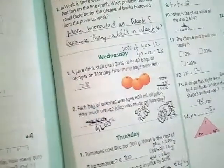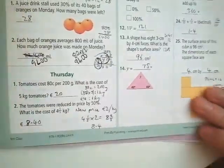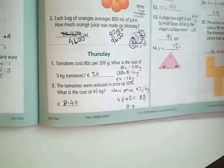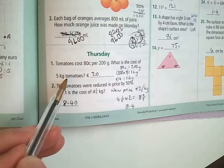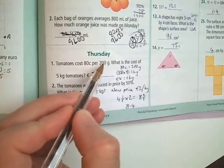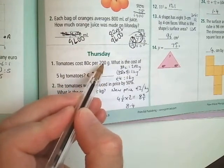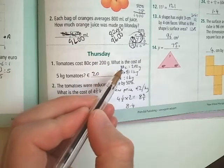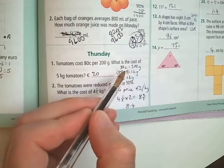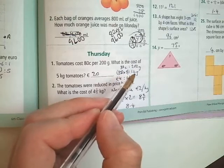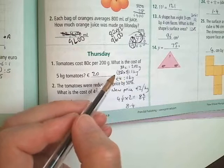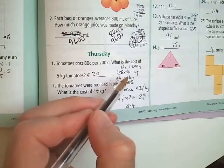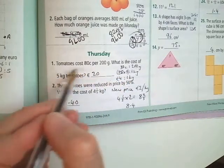Problem solving for Thursday. Tomatoes cost 80 cents per 200 grams. What's the cost of 5 kilograms of tomatoes? Okay, first of all, finding out 1 kilogram. 200 multiplied by 5 will give you 1 kilogram. So it's 80 cents for 200 grams. 80 multiplied by 5 will give you 1 kilogram. So that's 4 euros. 80 by 5 is 400, that's 400 cents. So it's 4 euros for 1 kilogram. If it's 4 euros for 1 kilogram, it's 20 euros for 5 kilograms.